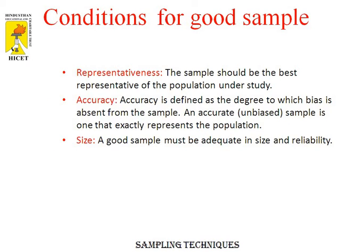These are the conditions for a good sample to be selected. Representativeness: the sample should be the best representative of the population under study. Accuracy is defined as the degree to which bias is absent from the sample — an accurate sample is one that exactly represents the population. The size of a good sample must be adequate and it should be reliable.